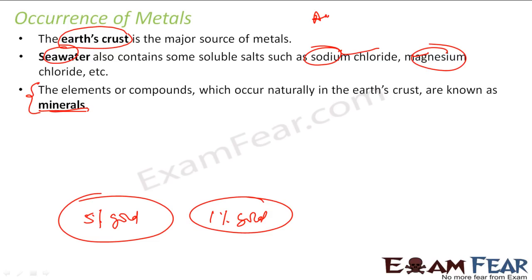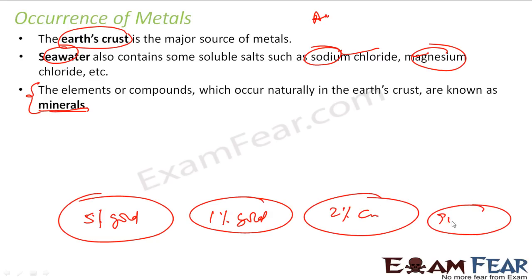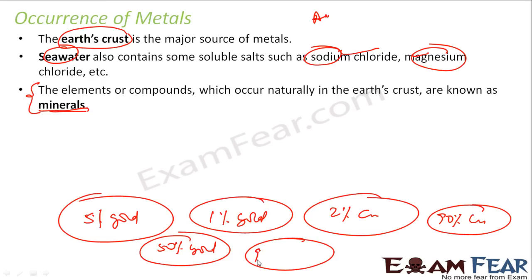A mineral is nothing but a naturally occurring thing which has some percentage of an elemental compound. For example, one rock may have 2% copper and another may have 90% copper. There are different kinds of minerals. But is it feasible to take all minerals? Is it feasible to take a mineral which has only 2% copper and extract copper from it? The cost involved to take out copper from this is too much and you get only 2% copper — it doesn't make sense.